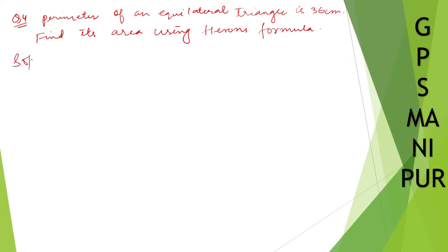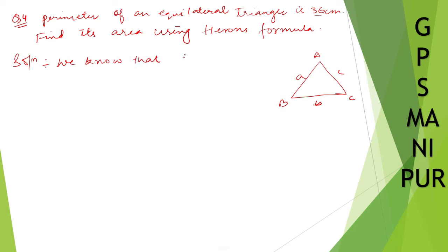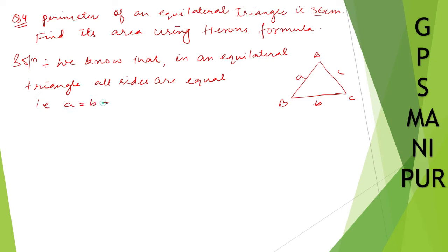For the solution, we know what an equilateral triangle is — all sides are equal. Let's say the sides are a, b, c. So a equals b equals c. We can represent each side as x, so a equal to b equal to c equal to x.